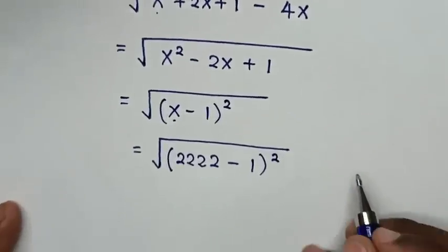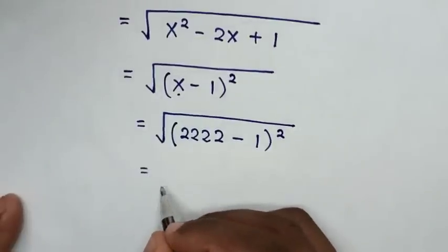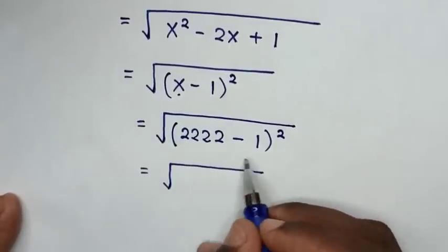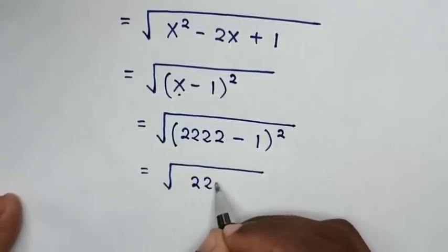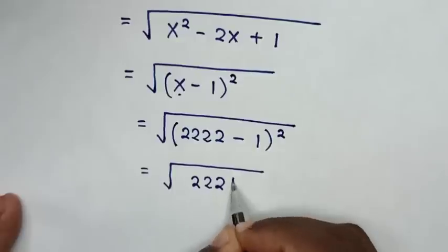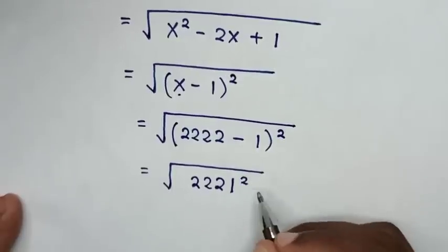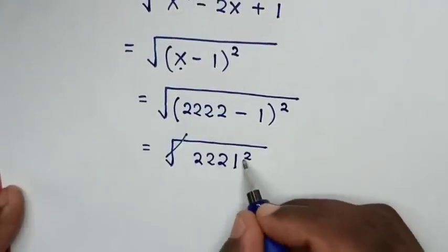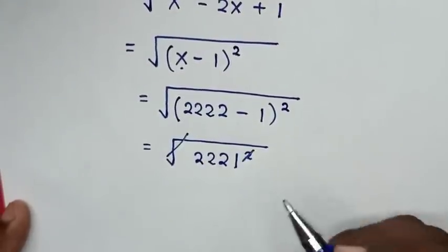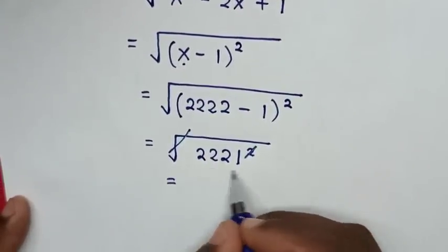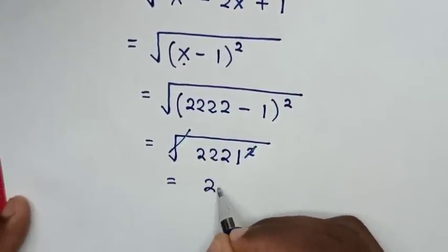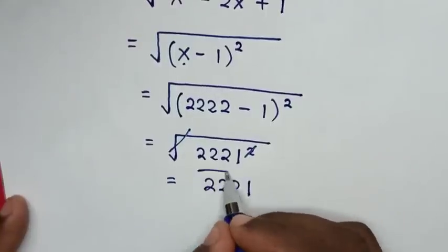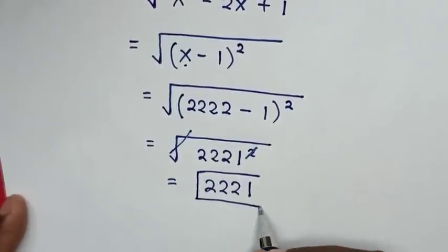Then, it will be equal to square root of (2221) squared. So, this square root will cancel with this square, then it will be equal to 2221. So, this is our final answer.